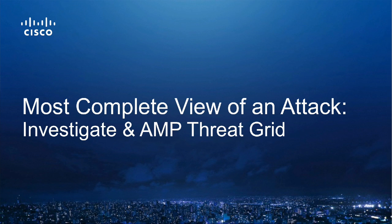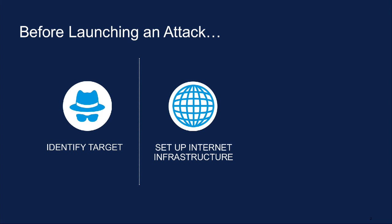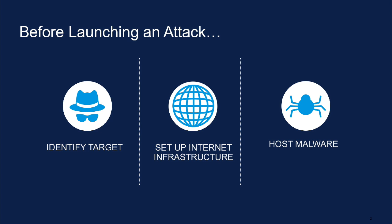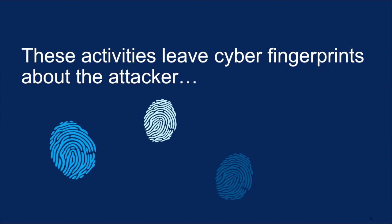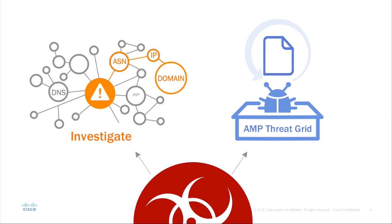Enterprises today face huge challenges trying to stay ahead of attacks and stopping threats before they cause damage. Before launching a campaign, attackers need to identify their target, buy blocks of IP addresses, and register domains to host their malware. All of these activities leave fingerprints that provide vital context when you're hunting or responding to an incident. At Cisco, we use these fingerprints to help map out the good and bad across the internet.